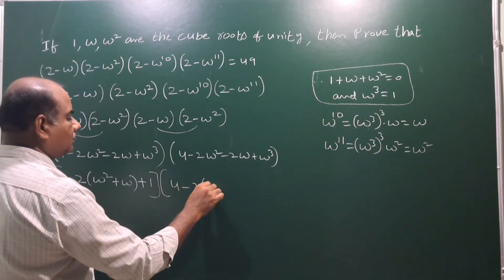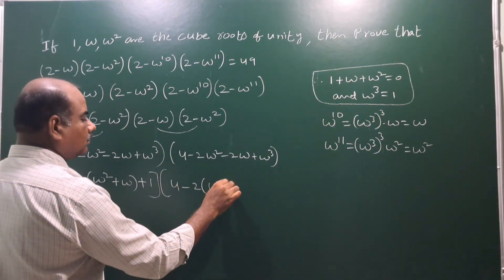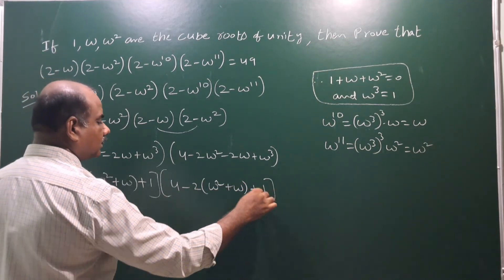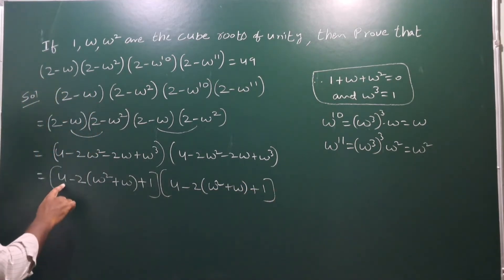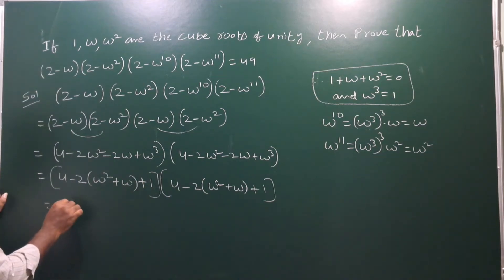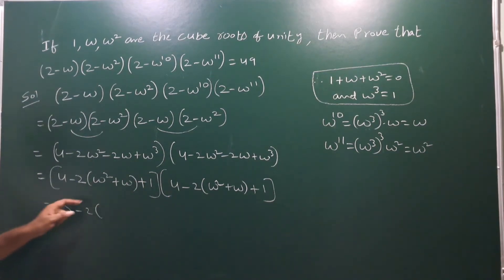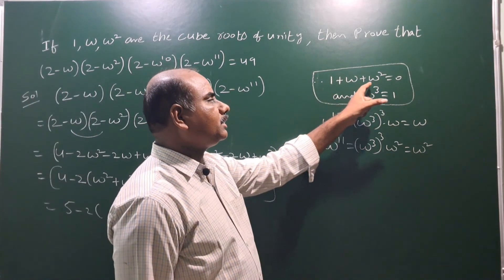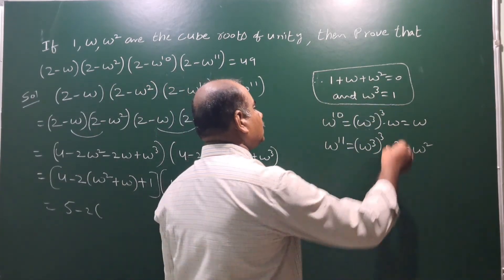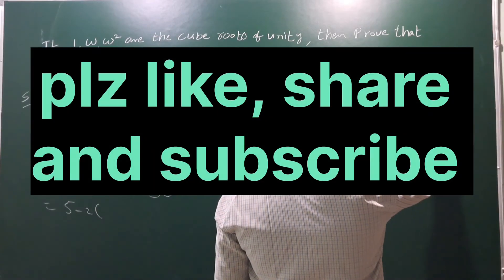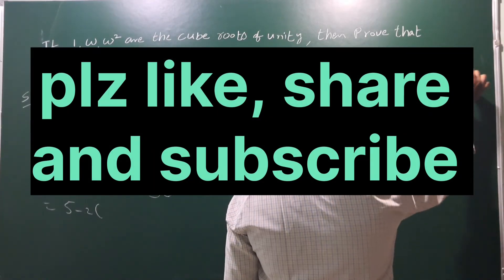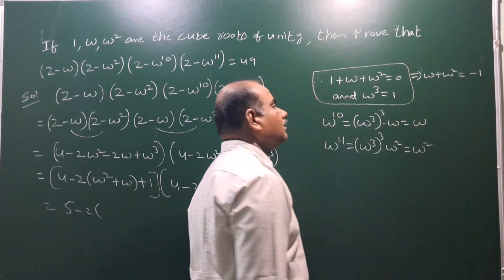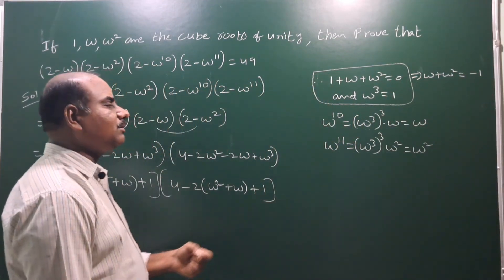So this becomes 4 - 2(ω² + ω) + 1, which is 5 - 2(ω² + ω). Now, from 1 + ω + ω² = 0, transposing 1 to the right side, we get ω + ω² = -1.